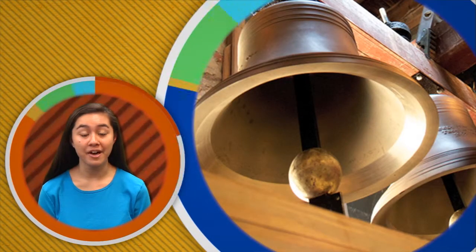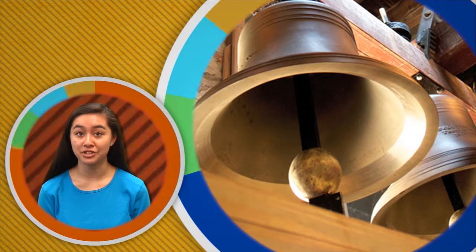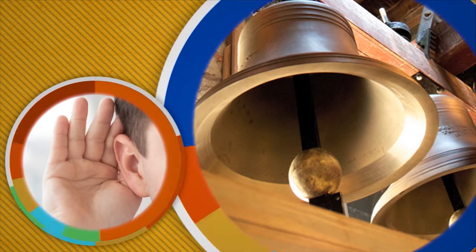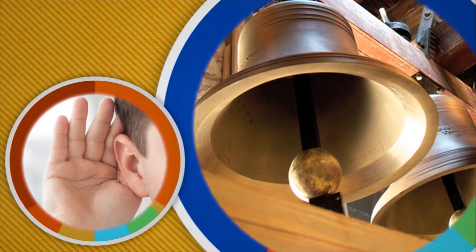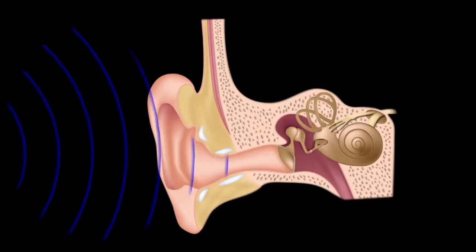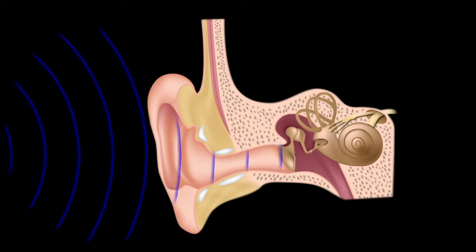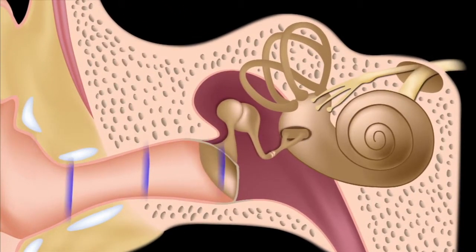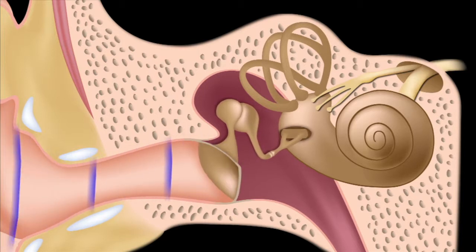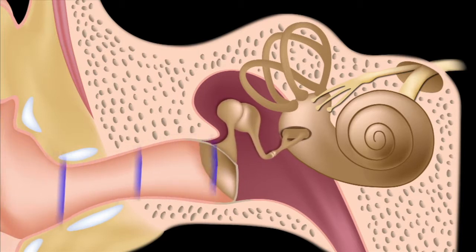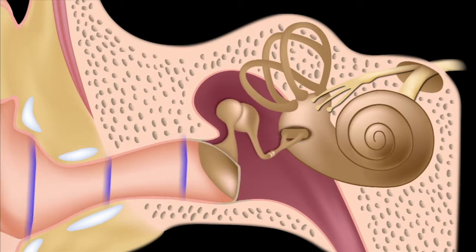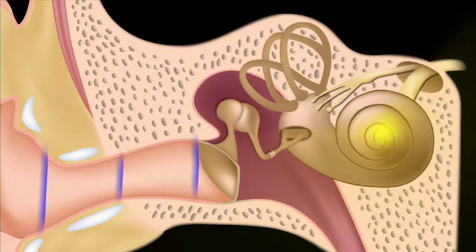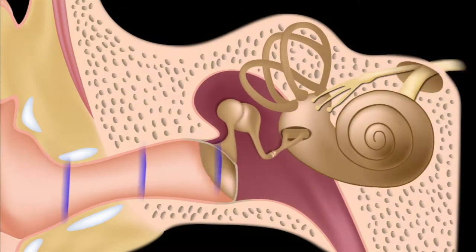The hitting of a hammer on a bell causes vibrations. How does the sound get from the bell to your ear? The vibration of the bell disturbs the surrounding air molecules, and the sound travels through the air to your ear in the form of a wave. Those waves travel into your ear where they vibrate your eardrum, and your brain interprets the sound.